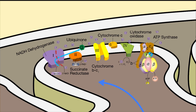FADH2 molecules, on the other hand, undergo oxidation in succinate reductase to become FAD, and electrons are released to ubiquinone. Electrons are transported from ubiquinone to cytochrome BC1, where some of their energy is again used to pump protons into the intermembrane space, further increasing the proton concentration gradient. The electrons are then transferred to cytochrome C, and finally to cytochrome oxidase. At cytochrome oxidase, electron energy is again utilized to transport protons across the membrane.